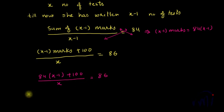if I cross multiply, then this will become 84 multiplied by X minus 1 plus 100 is equal to 86X.